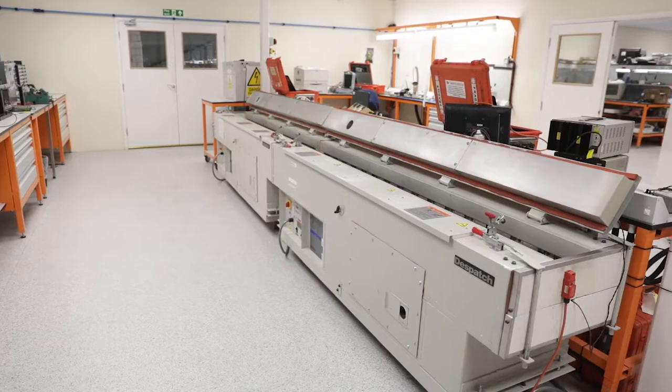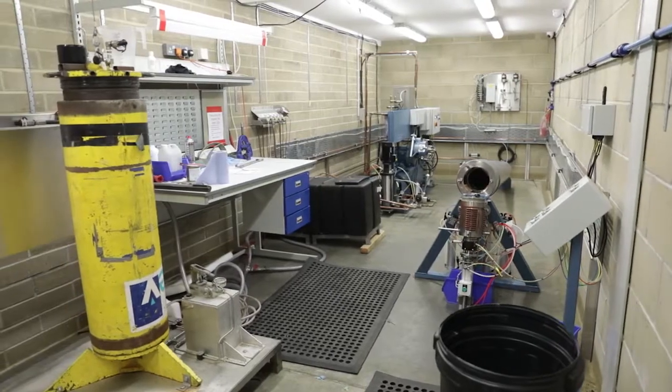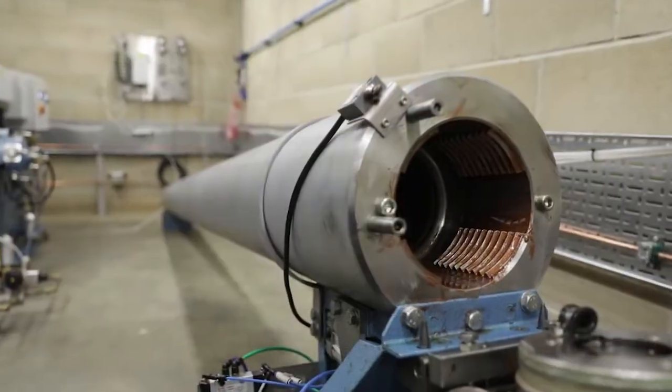These include ovens for testing partial or complete assemblies at up to 200 degrees Celsius, a facility for pressure testing equipment at up to 1,400 bar.